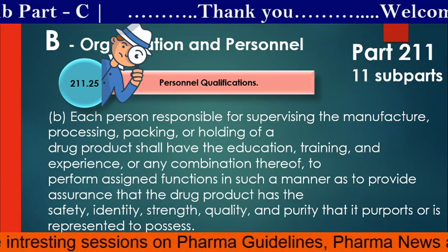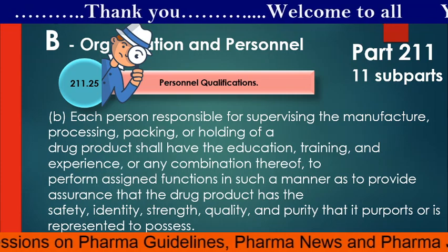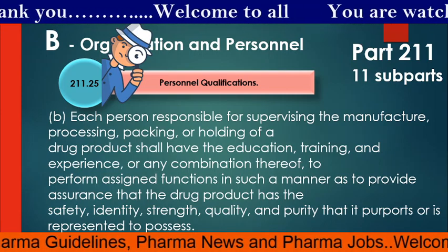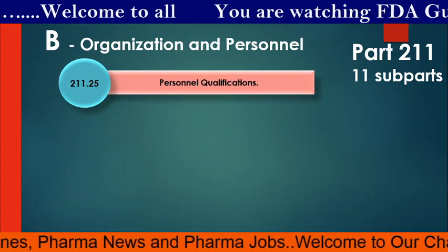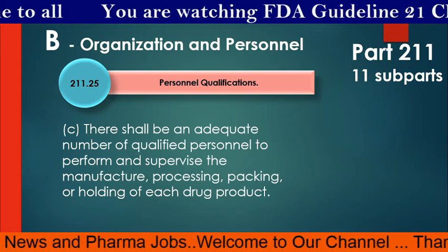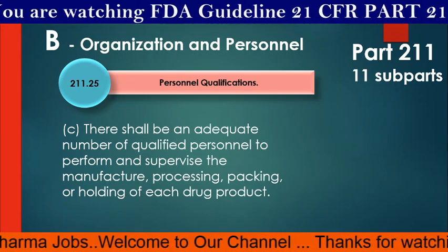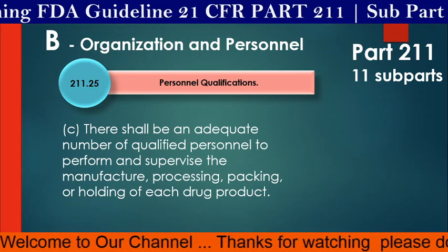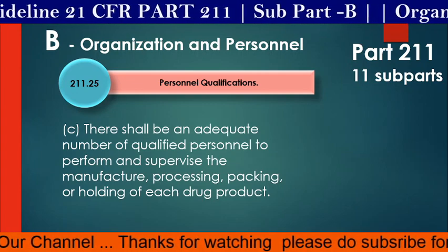Supervisors perform assigned functions in such a manner as to provide assurance that the drug product has the safety, identity, strength, quality and purity that it purports or is represented to possess. There shall also be an adequate number of qualified personnel to perform and supervise the manufacture, processing, packing or holding of each drug product — this refers to the quantity of people required to do and verify.